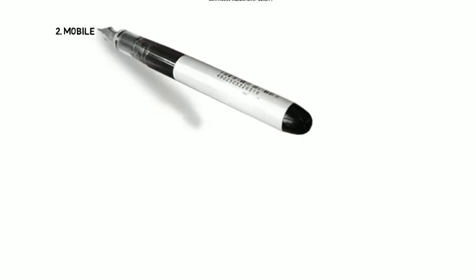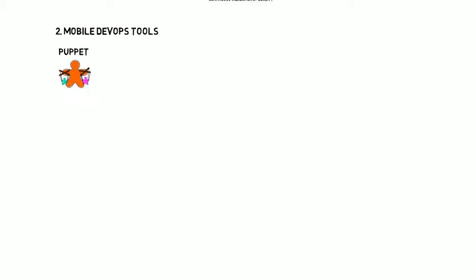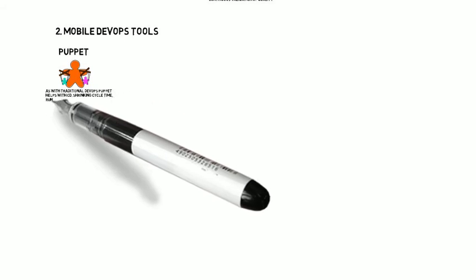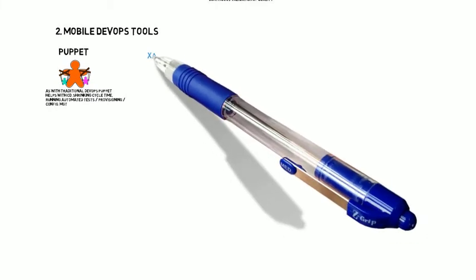So, mobile DevOps tools. We'll start with Puppet — a familiar name for many who have used it in the past. It offers configuration management and other capabilities, similar to traditional DevOps. Puppet will help with CD, continuous delivery, helping to shrink cycle time, running automated tasks, provisioning, and configuration management. Some of the other tool names coming up may not be familiar unless you're already well-acquainted with the mobile space.